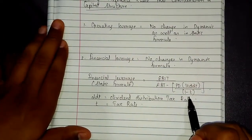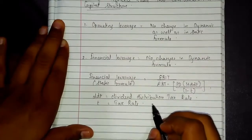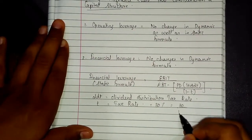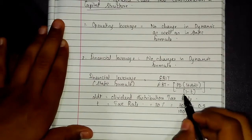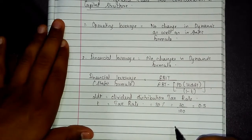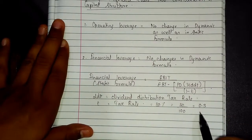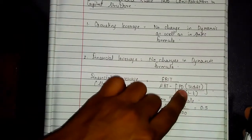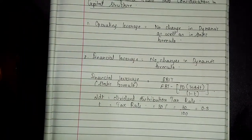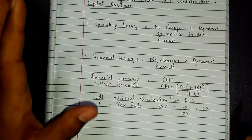For example, if the tax rate is 30%, then 1 minus T equals 1 minus 0.3, which equals 0.7. That means the preference dividend will be divided by 0.70, and whatever amount results will be subtracted from EBT to get your financial leverage.